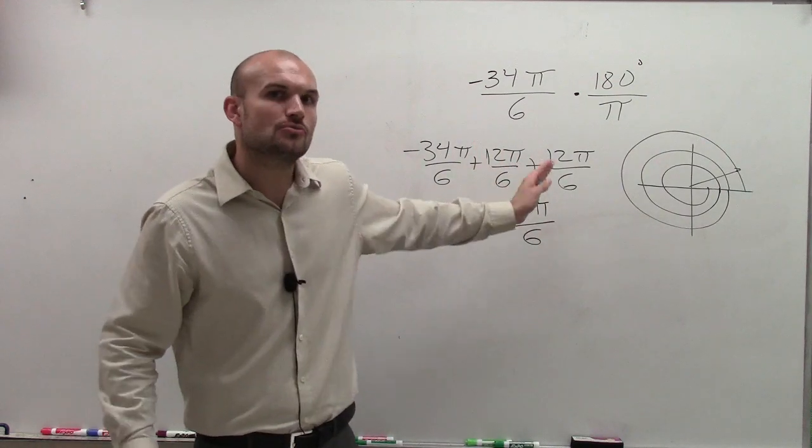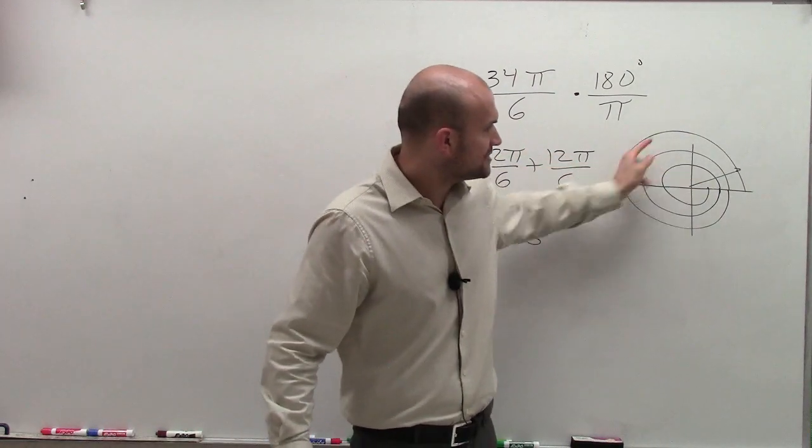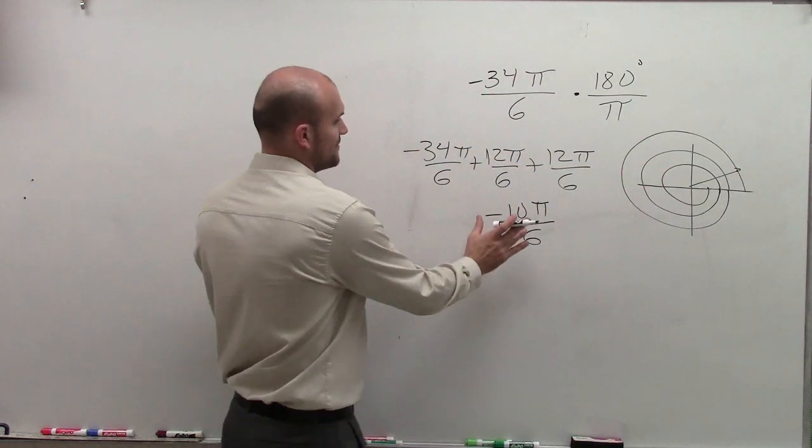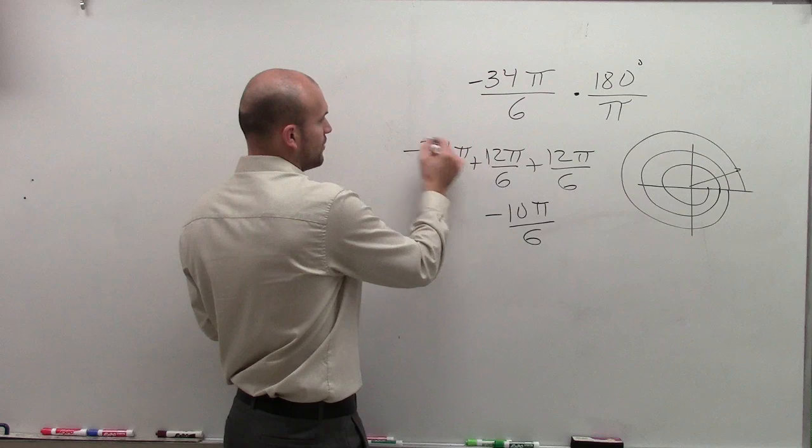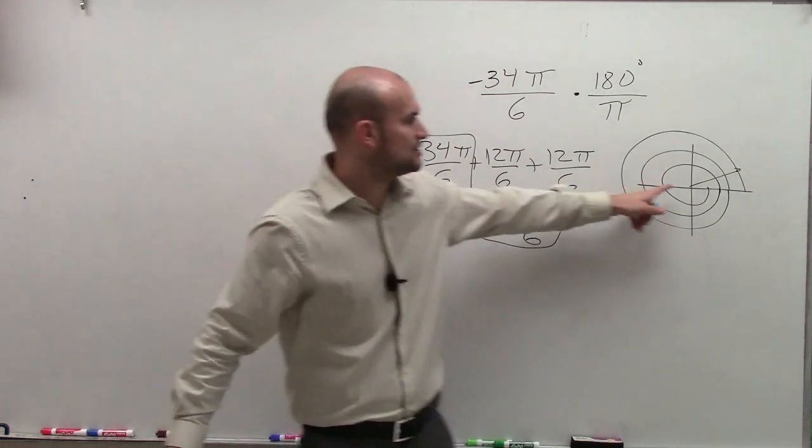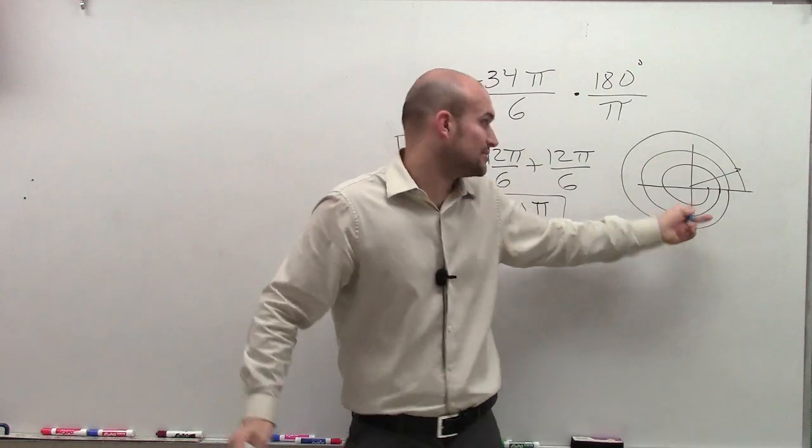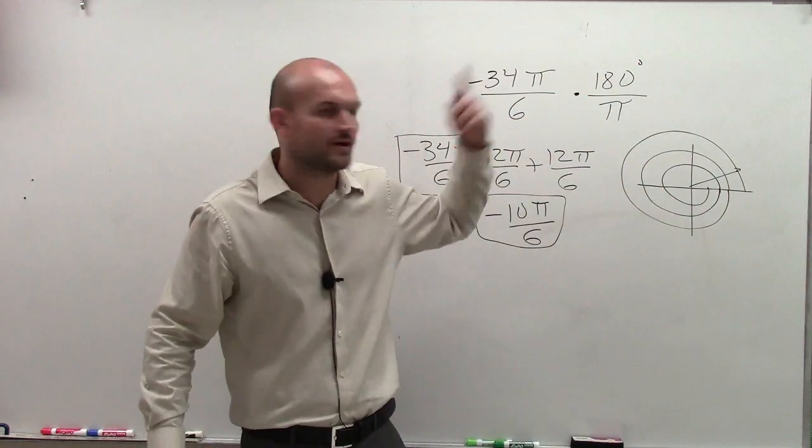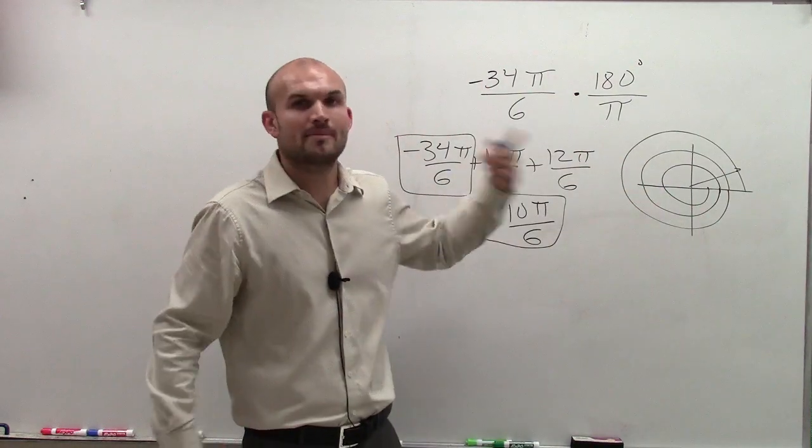So by adding 2π, by adding these revolutions, what I've done is these are equivalent. All I did was I reduced these extra revolutions we had to do, because this is over my revolutions.